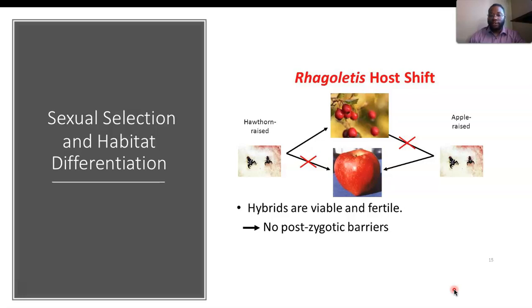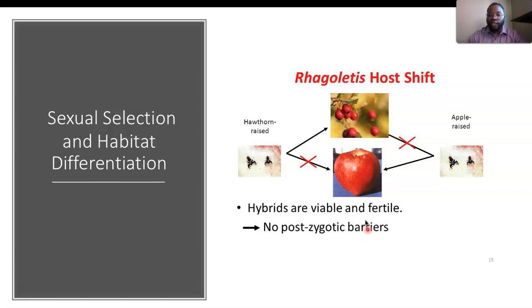Sexual selection and habitat differentiation allow us to go further into species concepts using Rhagoletis, a fruit fly. The hawthorn-raised and apple-raised fruit flies come from the same species, but because they hybridize on different fruits, different species arise based on the different food source. Hybrids are viable and fertile, and there are no postzygotic barriers between the hawthorn-raised and apple-raised fly, though there is differentiation in the habitat food resource.